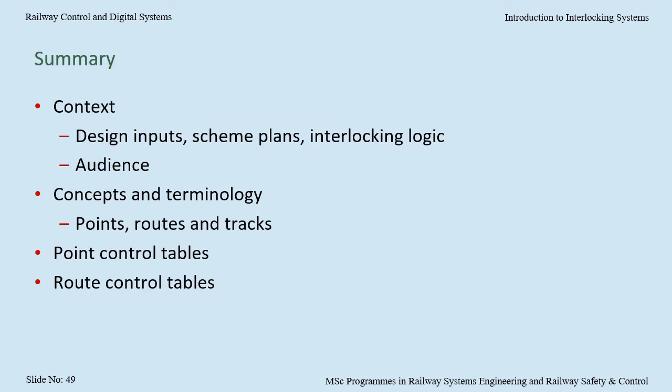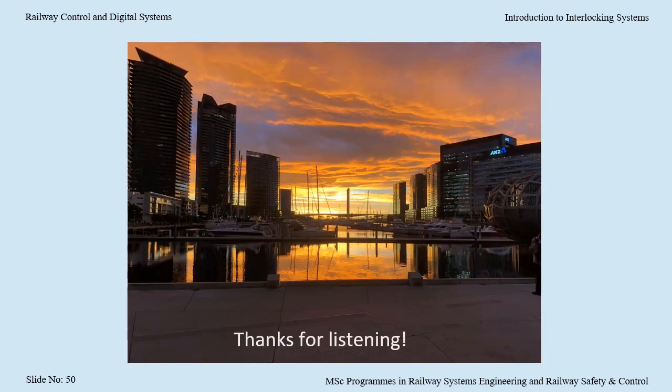In summary, we covered the context of a control table, including design inputs, scheme plans, interlocking logic and the audience. We covered concepts and terminology relating to points, routes and tracks. And we went through the basic fields in typical point control tables and basic route control tables. Thanks for listening.